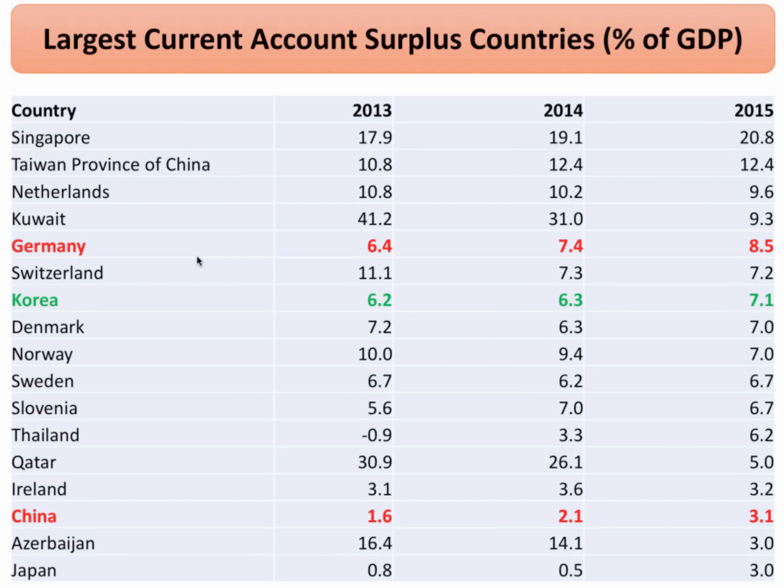To put extract two in context, looking at the latest figures for countries running the biggest current account surpluses: while extract two focuses on China, China's surplus as a share of GDP is actually quite small compared with countries like Singapore, Taiwan and the Netherlands, where figures above 10% of GDP are quite staggering. Germany — one of the world's biggest surplus countries, Europe's biggest economy — and South Korea, a very successful manufacturing country with globally scaled businesses running big surpluses, are also notable examples.